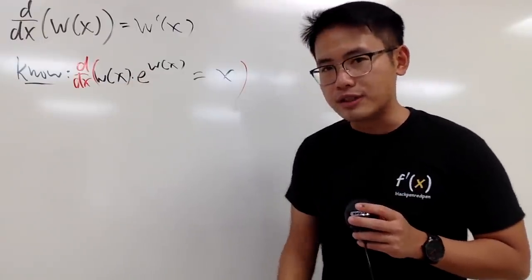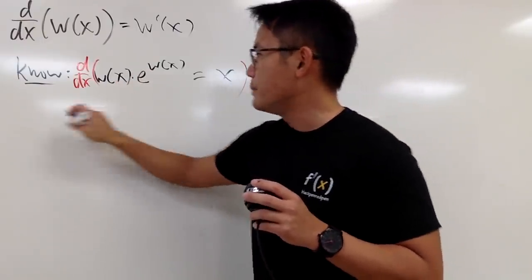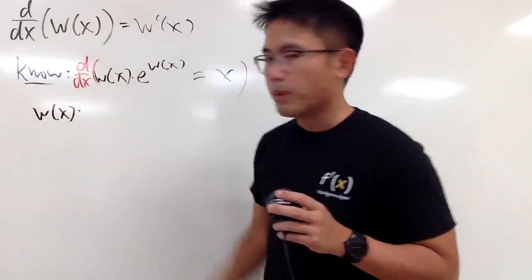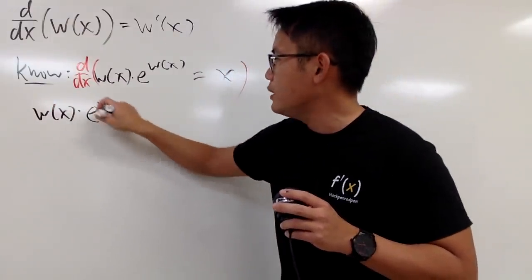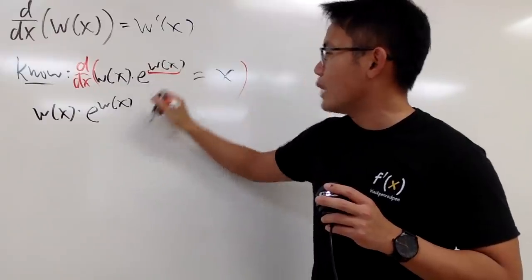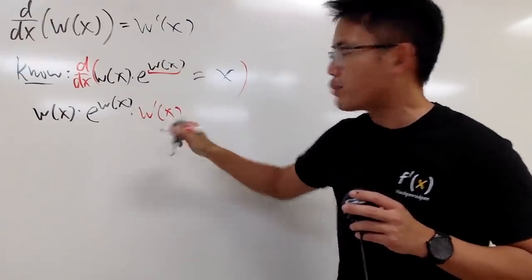On the left-hand side, this is a product of two functions, so we are going to use the product rule. So I will keep the first function, namely W of x, and we multiply by the derivative of second, which is going to be e to the W of x. And then by the chain rule, we have to multiply by the derivative of that, which is W prime of x.